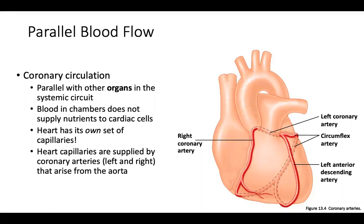The coronary circulation is considered parallel because some of the blood goes to the heart in this fashion. Not all of the blood — but some goes to the coronary circulation to supply the heart muscle and remove waste. The blood in the chambers does not supply nutrients and oxygen or eliminate waste from the cardiac myocytes. It is just acting as a reservoir and a pump, whereas the coronary circulation is how the heart receives its blood, through its own capillary network.